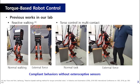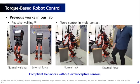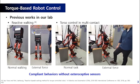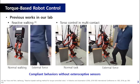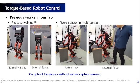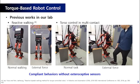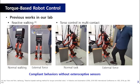Previously, we implemented reactive walking of a biped robot and multi-contact control of a humanoid robot. In both cases, human pushed the robot unexpectedly, and the robot kept its balance successfully without using exteroceptive sensor measurements.